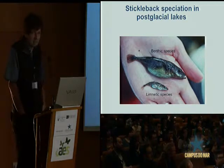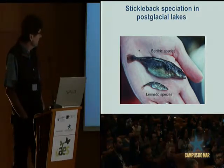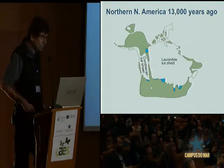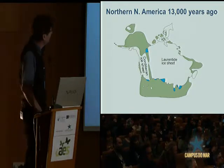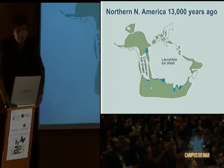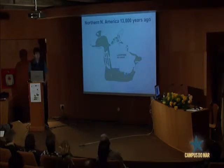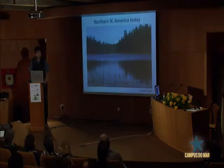I started working on stickleback when I moved to Vancouver, having learned about these amazing populations while looking for a system in which it would be possible to do experimental studies — being very difficult with Darwin's finches. To understand what has happened, one needs to start with the ice age. About 13,000 years ago, the area where I work was covered by ice about one and a half kilometers thick. The ice melted fairly rapidly over a period of around 1,000 to 2,000 years. After the ice melted, the weight had pushed coastal lands down into the sea, and sea levels were about 150 meters higher than today. As the land rebounded, it formed many small coastal lakes.